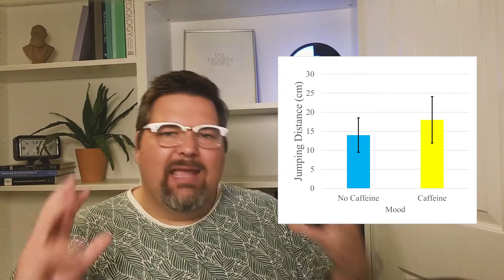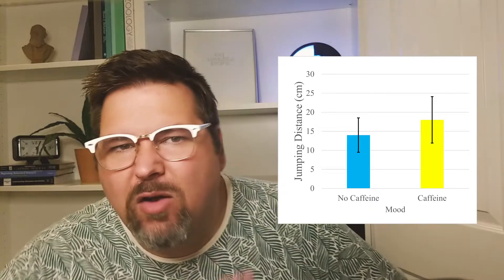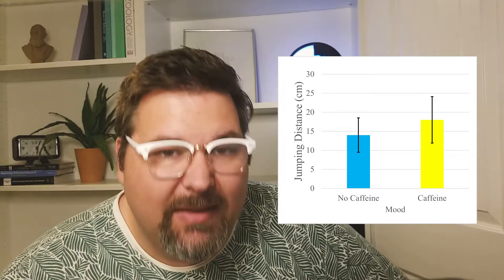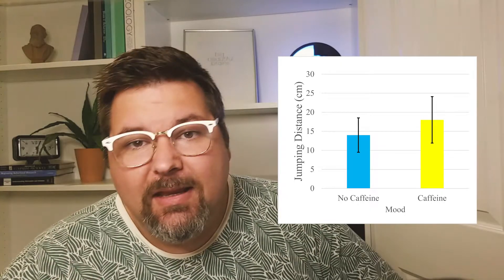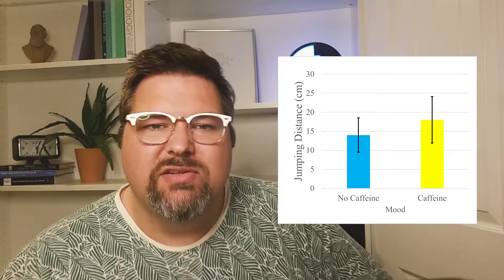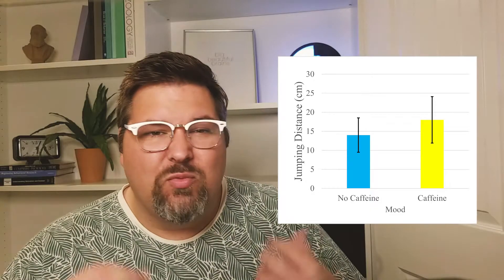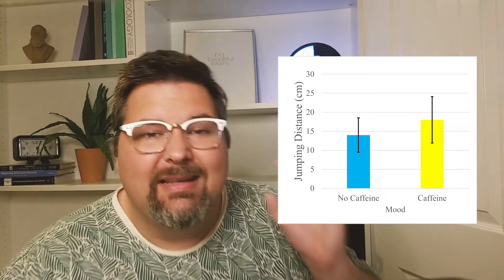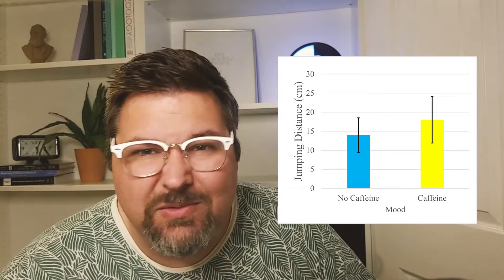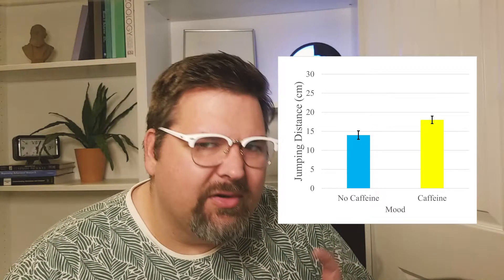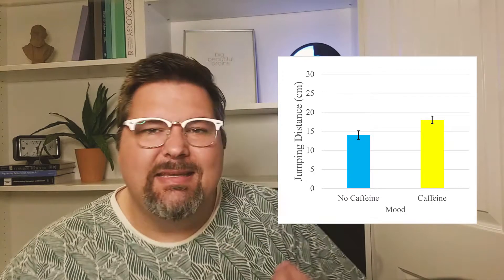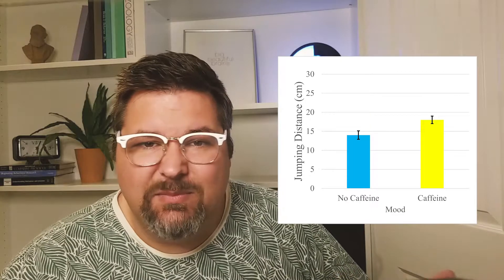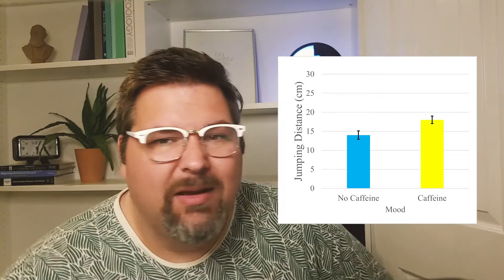By adding error bars, it gives you some information about how much variability there was in the sample, and variability reflects error. If the error bars are large, there's a lot of variability in the sample, and I would need a really big difference between the groups in order to be confident that that difference is real and not just due to error. On the other hand, if the samples have small error bars, it may be easy to say with some confidence that, though there's some wiggle room in my estimate of the measurement, these groups appear really different.